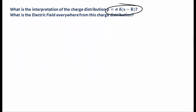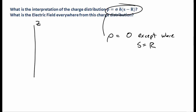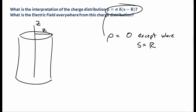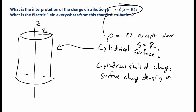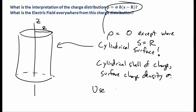Let's use this in some physics. What's the interpretation of a charge distribution rho equal to sigma times delta of s minus r? Well, this is zero except where the cylindrical coordinate s is equal to r. If we draw a picture, when the cylindrical coordinate equals r, you get a nonzero value there — 0 everywhere except s equal to r — which looks like an infinite cylindrical surface. So this charge distribution, sigma times delta of s minus r, represents a cylindrical shell of charge with surface charge density sigma.